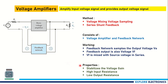The properties and advantages of voltage amplifiers are that they provide amplification of the voltage signal and stabilize the voltage gain. The requirement here is high input resistance and low output resistance, which is provided by this series-shunt feedback topology.